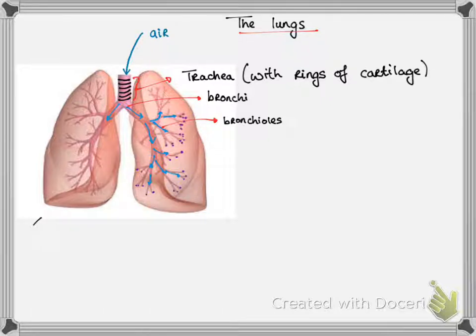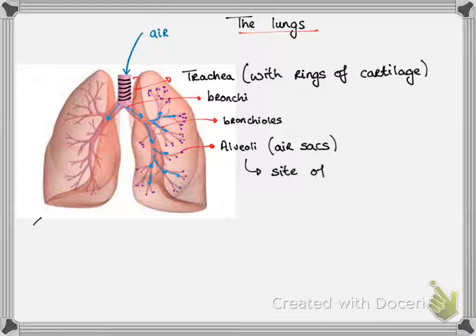Until it reaches the end of these branches where there are tiny little air sacs called the alveoli. So you could just imagine these have been the leaves of the tree. These are air sacs and these are the site of gaseous exchange.